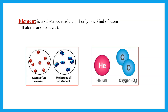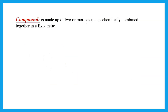Everything in the periodic table is an element. Helium is an element, and anything else in the periodic table is an element. Oxygen is also an element, but oxygen is an example of a diatomic molecule in which the molecule is made up of two atoms. So all of these are elements.